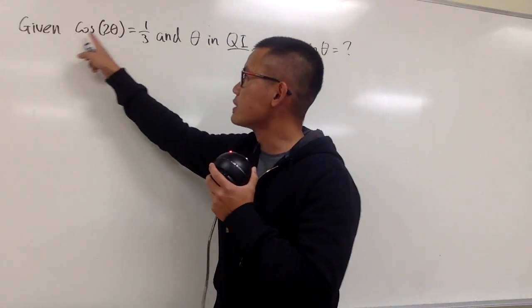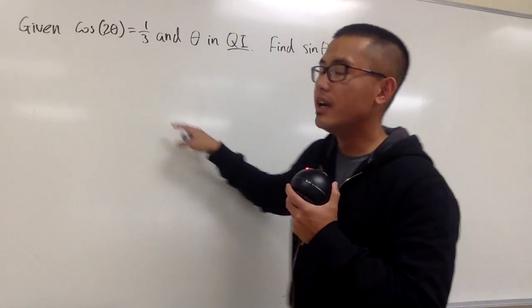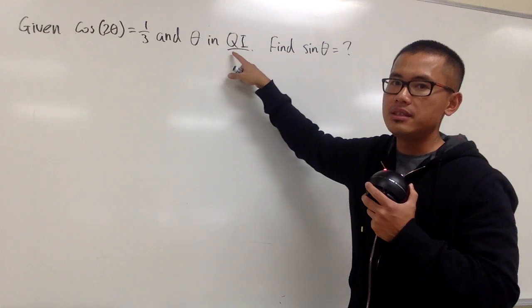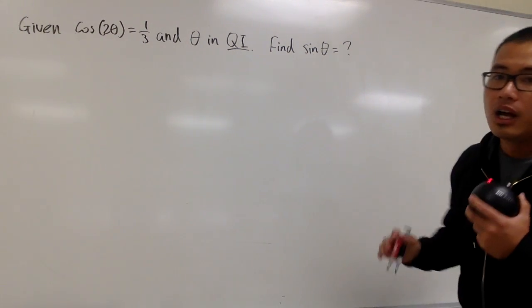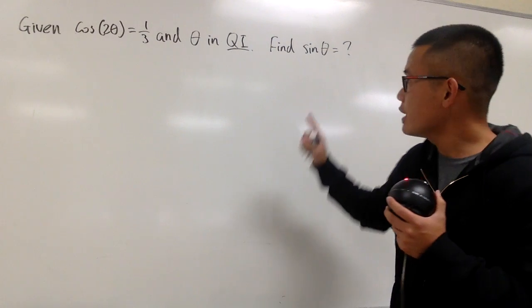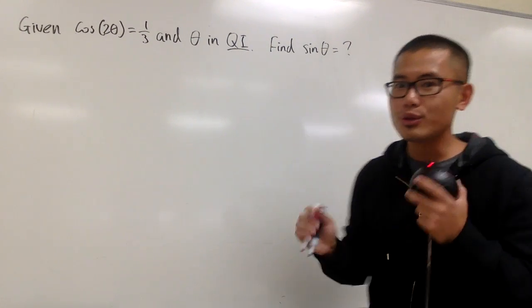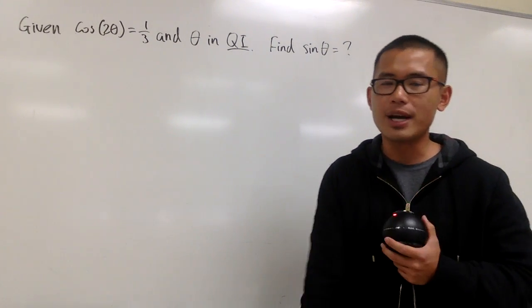Okay, in this question, we're given that cosine 2 theta is equal to 1 third, and we know that the angle theta is in the first quadrant. Well, we're trying to figure out the value for sine theta. Be careful of this, we're not trying to look for theta by itself, we're looking for the value for sine theta, right?